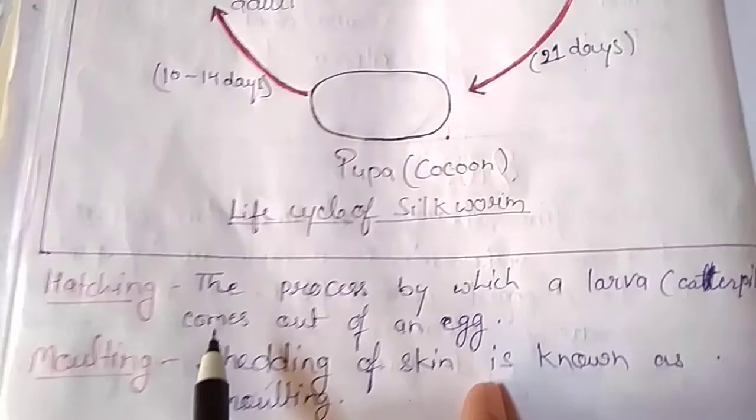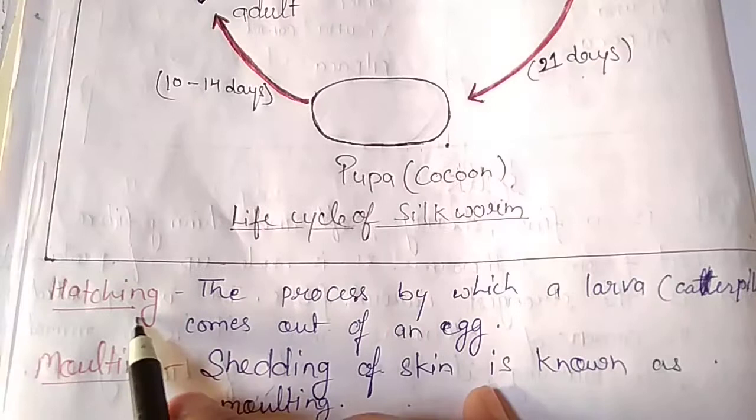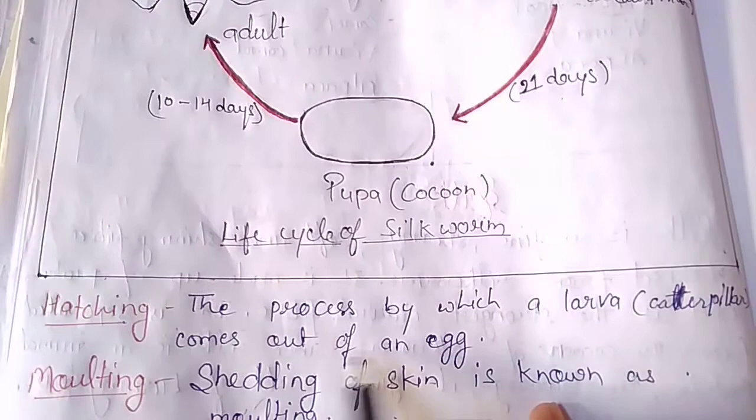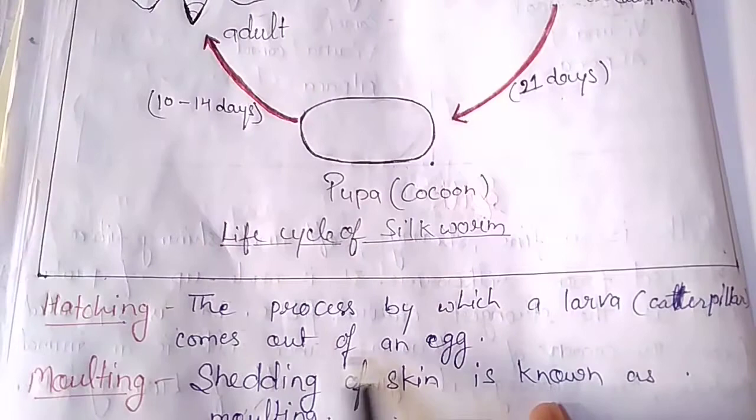In this topic we heard two important terms. First, hatching: the process by which a larva or caterpillar comes out of an egg is known as hatching. Second, molting: the process of shedding of skin is known as molting.